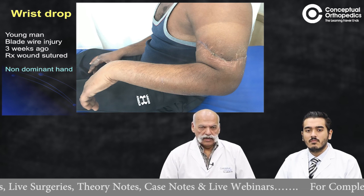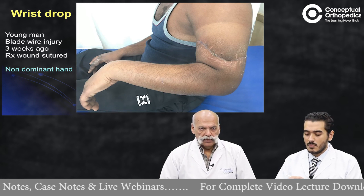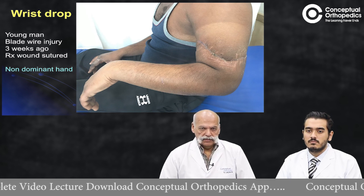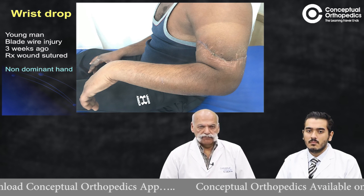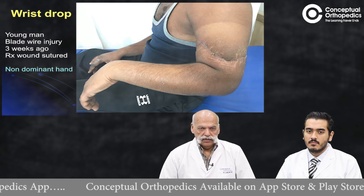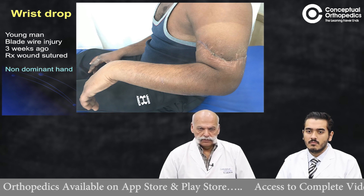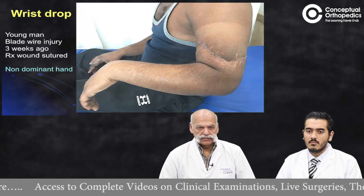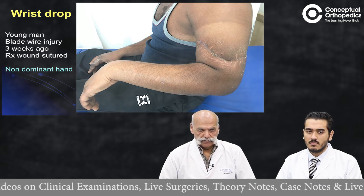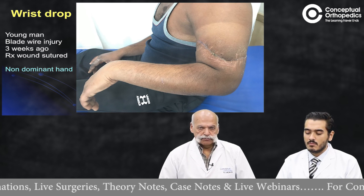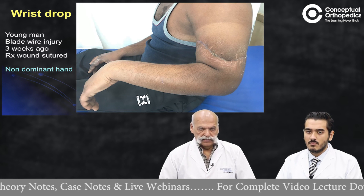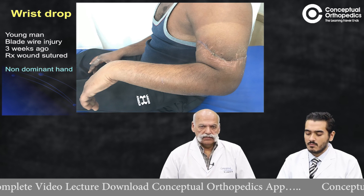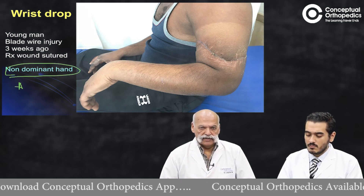We are presenting a patient I had the opportunity to treat recently — a young man who was riding a motorcycle and grazed past a blade wire, creating an injury inflicted by a sharp object. The initial treatment was simple debridement and wound suturing in view of the laceration and some maceration of the muscles. He presented three weeks later, and importantly, this was the left non-dominant limb of the patient.